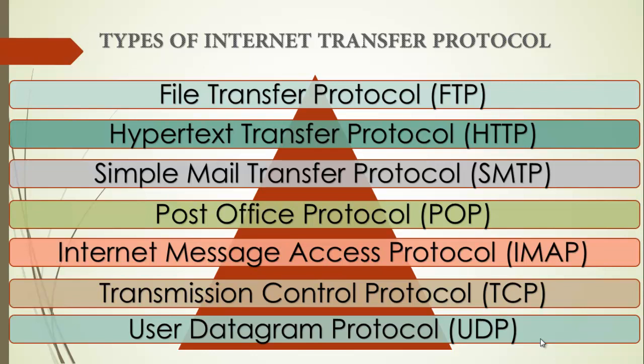We also have the Transmission Control Protocol, or TCP, which is used to establish and maintain connections between devices on a network. It is responsible for ensuring that data is delivered reliably and in order. Then we have the User Datagram Protocol, or UDP, used for sending and receiving data over a network. UDP is faster than TCP but does not provide the same level of reliability.